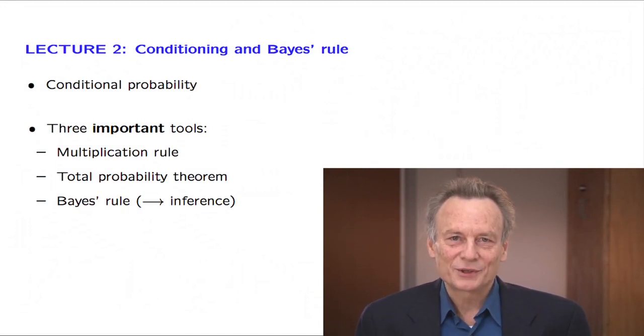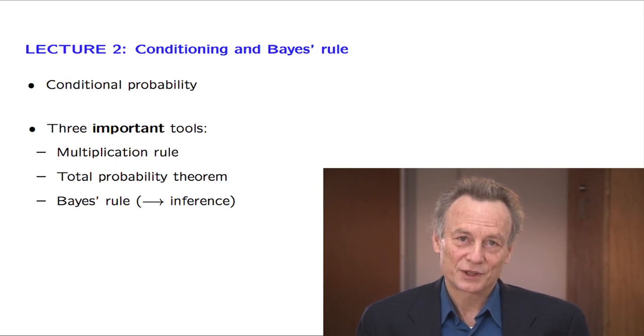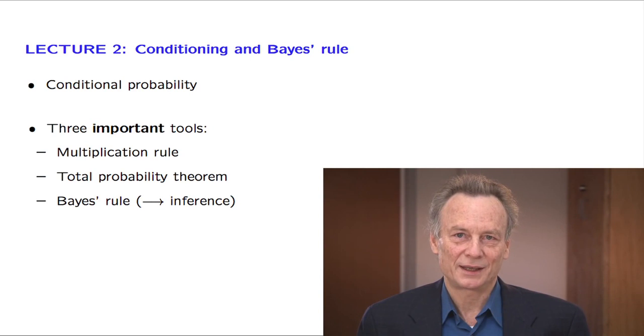Suppose now that I tell you that this person is married. Will you give the same answer? Of course not. The probability of being less than 18 years old is now much smaller.